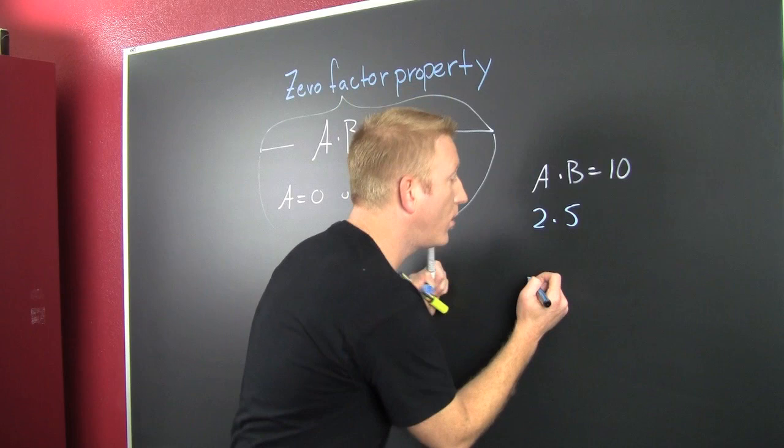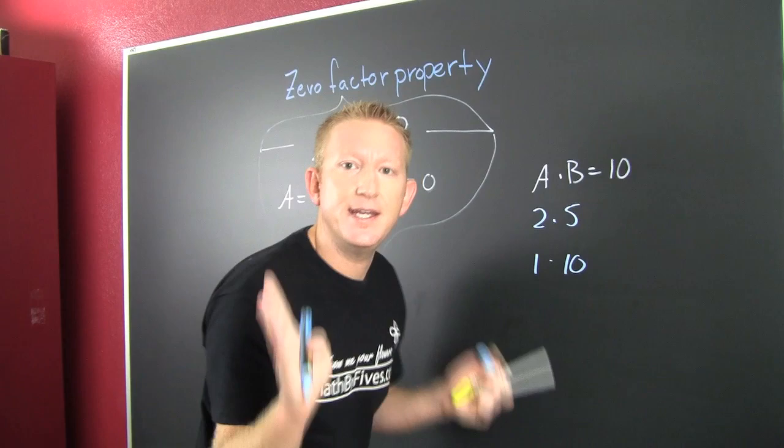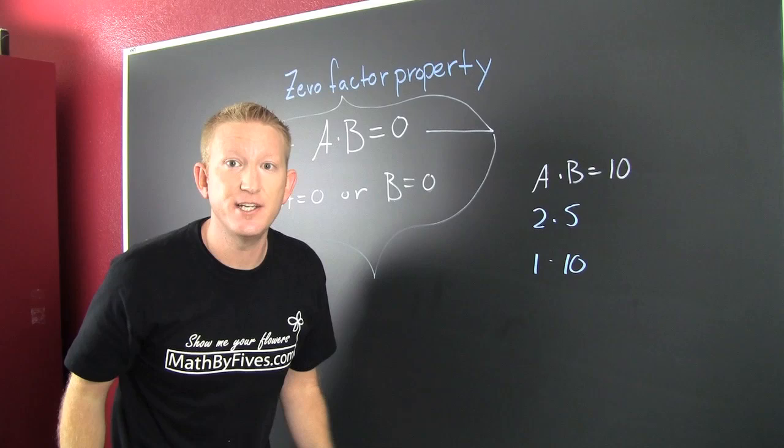This could be a one and a ten, but in that case it worked. It needs to work in all cases. Can you think of multiplying two things together and that product to be zero with one of them not being zero?